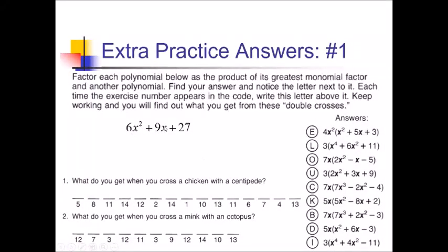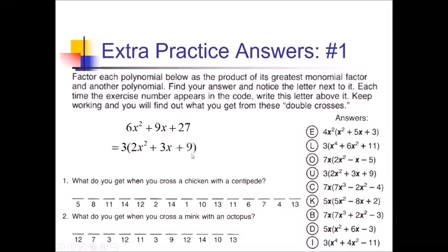For problem number one, we've got 6x squared plus 9x plus 27. Looking at greatest common factors: 6, 9, and 27 — 3 is the biggest number that goes into all of those, so I'll take out a 3. I can't take out any x's because 27 doesn't have an x. Dividing all terms by 3 gives me 2x squared, 3x, and plus 9. That matches letter U, so I'm going to go to spot number one and put a U there.